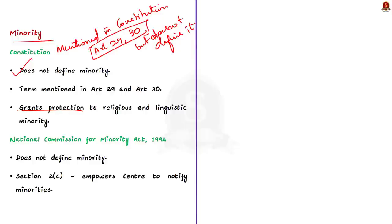Other than the Constitution, you have to remember that an act is responsible for notifying minorities in our country. It is the National Commission for Minority Act of 1992. So, this 1992 Act also does not define the term minorities. So, we can safely say that Constitution does not define minority and the 1992 National Commission for Minority Act also does not define the term minority.